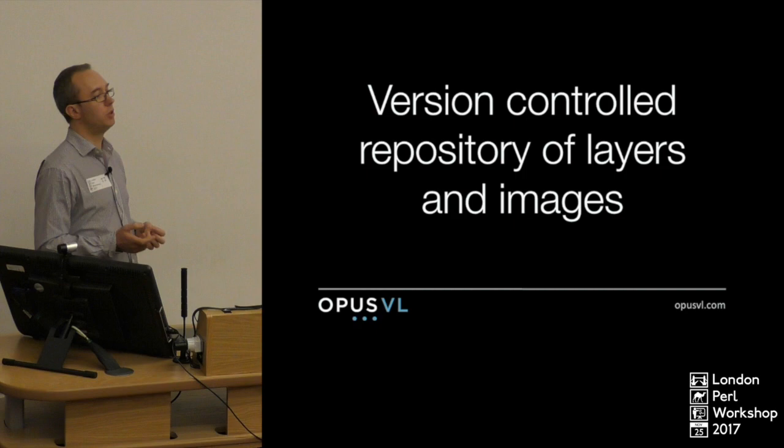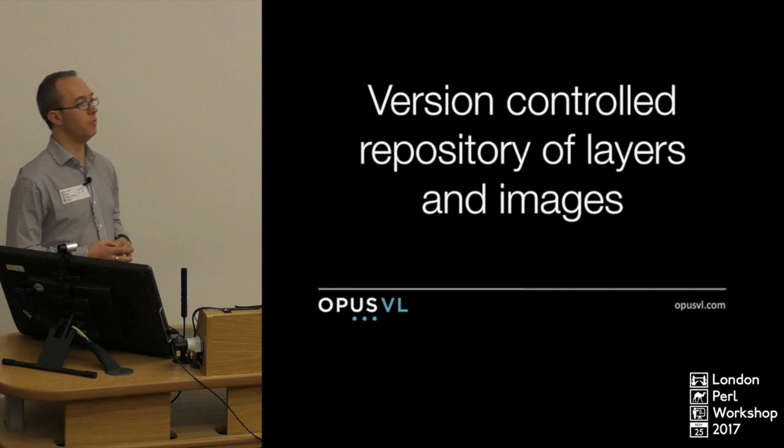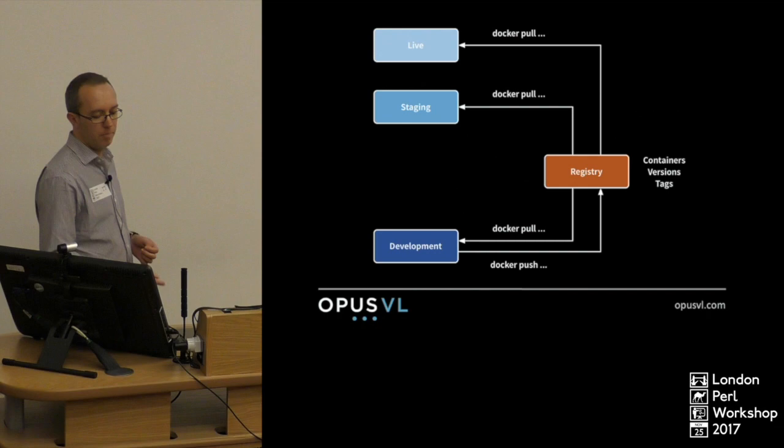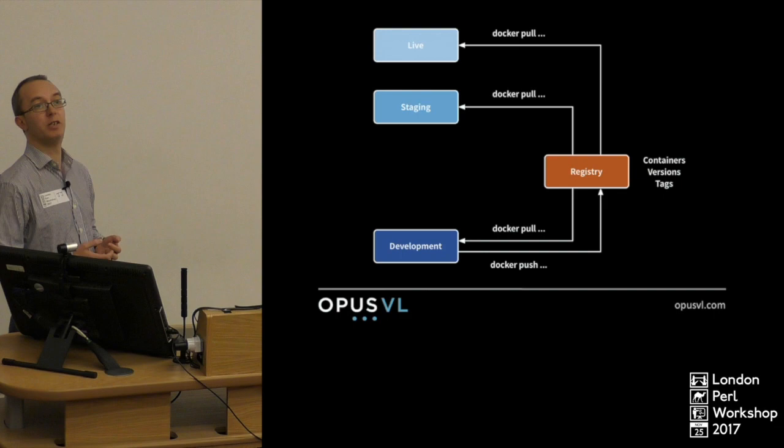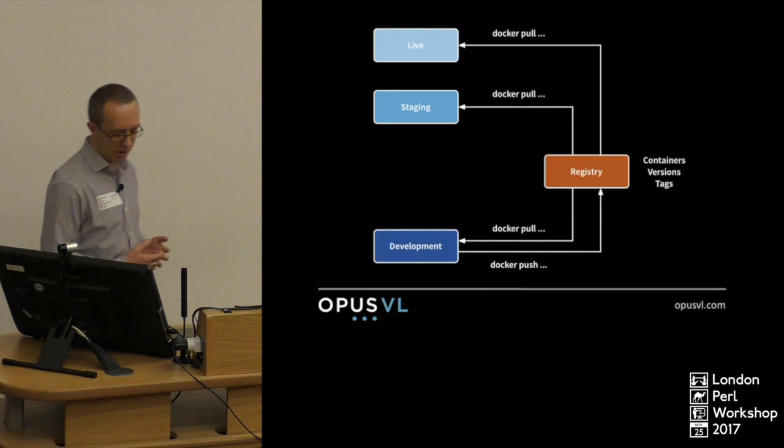A Docker registry is a version-controlled repository of your images. Just like any source control system, from your development environment you can push an image up to the registry, and then from your staging and production environments you can pull it down again.